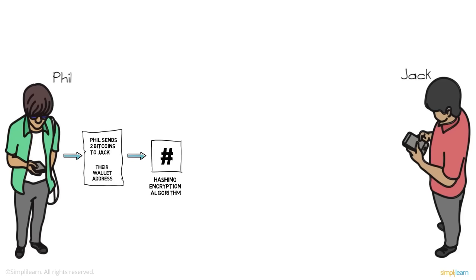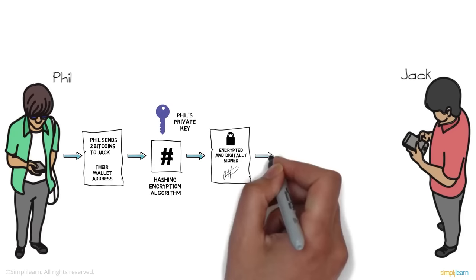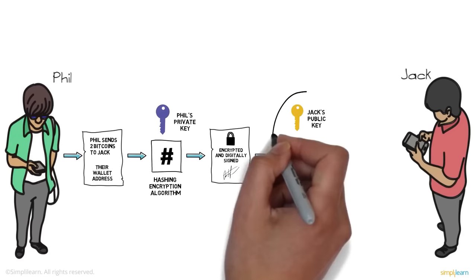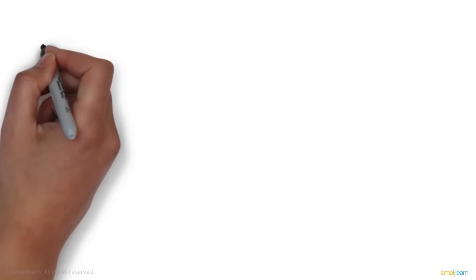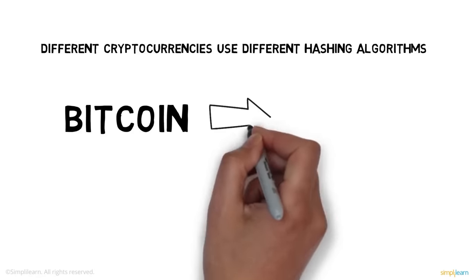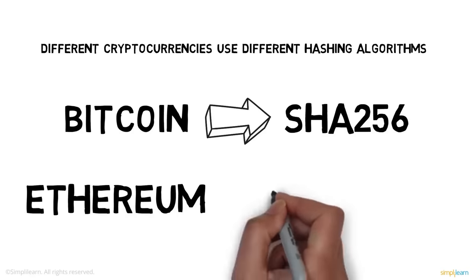First, Phil passes the number of bitcoins he wants to send to Jack, along with his and Jack's unique wallet addresses, through a hashing algorithm — all part of the transaction details. These details are encrypted using Phil's unique private key to digitally sign the transaction and indicate it came from Phil. This output is then transmitted across the network using Jack's public key, so the transaction can only be decrypted by Jack's private key.